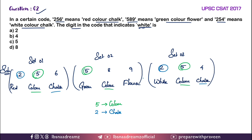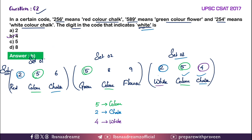They are asking you to find the code for white. White is here in Set 3. We have already taken 2 as chalk and 5 as color. So the remaining is 4, and white — so 4 means white. Option B, 4 is the right answer.